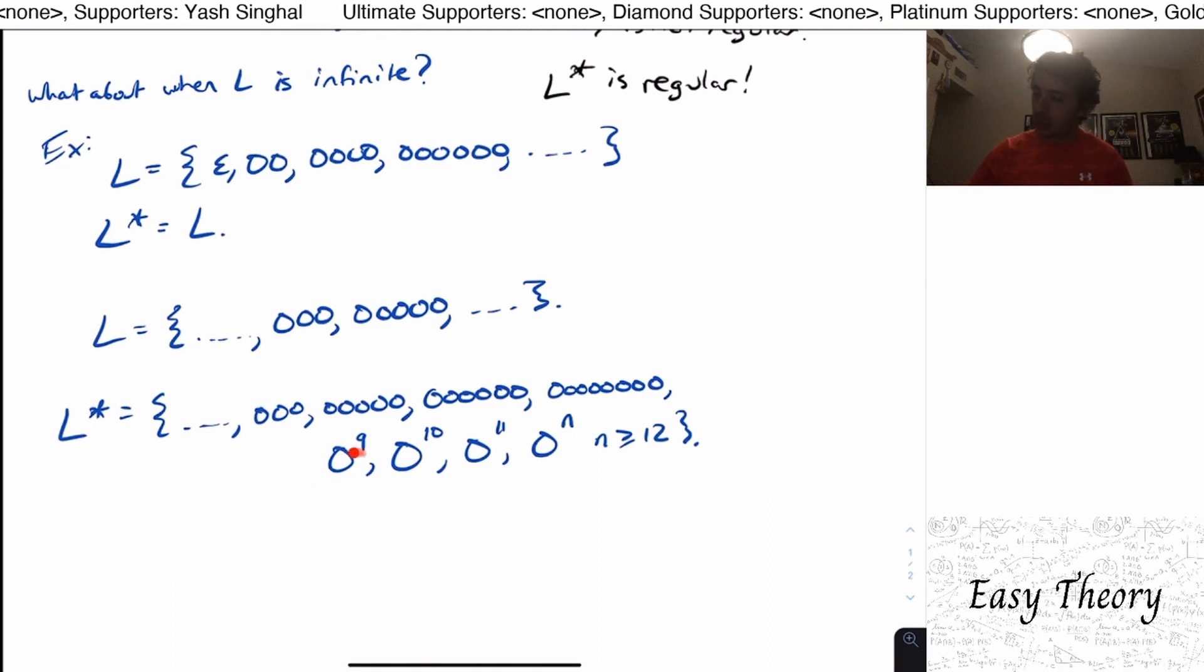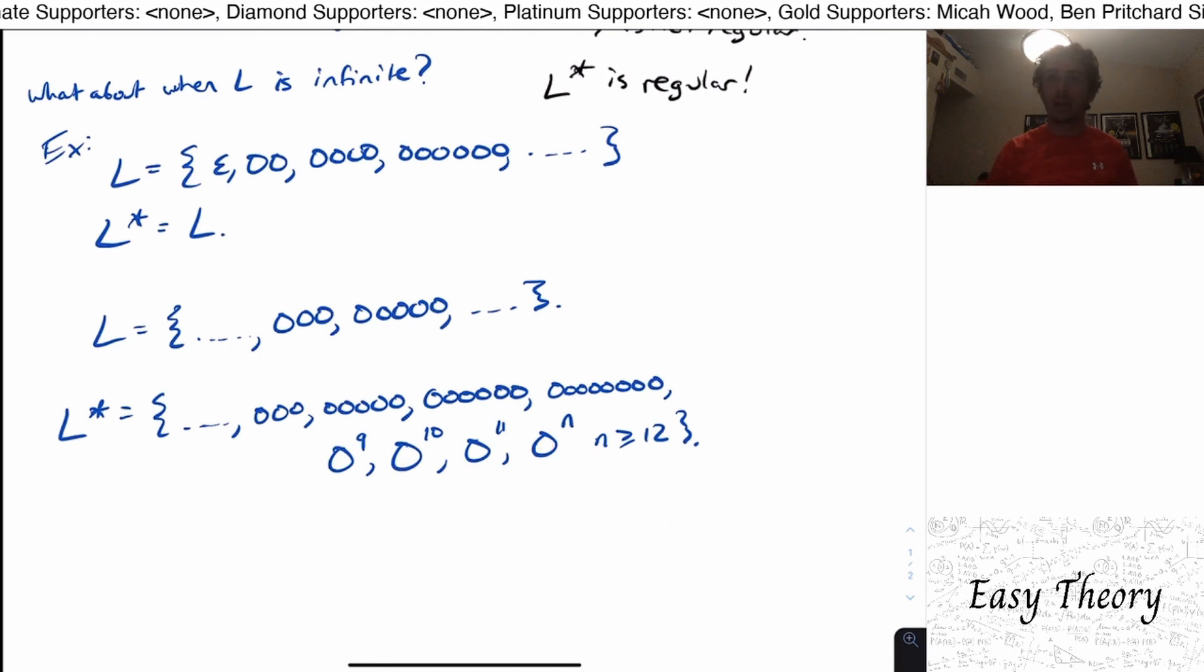And why is that? Well, we can get zero to the nine. Well, then I can just append the three zeros onto this to get zero to the 12, append three zeros onto this to get zero to the 13, and then this one to get 14.